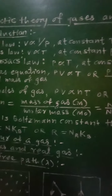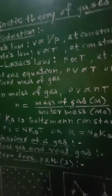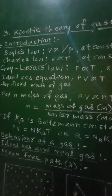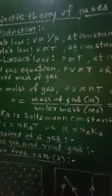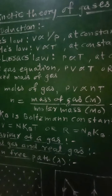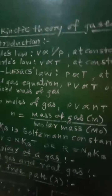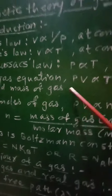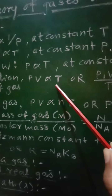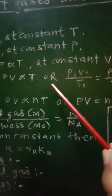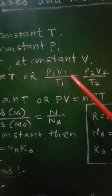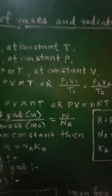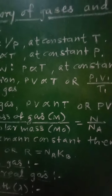If we combine all these three gas laws, we will get the ideal gas equation for a fixed mass of gas. The ideal gas equation for fixed mass of gas will be given as PV proportional to T, or it can also be written as P₁V₁/T₁ = P₂V₂/T₂.